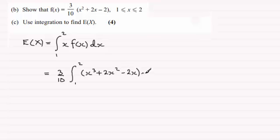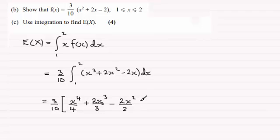We're going to get three tenths, and setting up a square bracket here, integrating x cubed, we just add 1 to the power, that's x to the power 4 and divide by the new power. For 2x squared, it's going to be plus 2x cubed, add 1 to the power and divide by the new power. And for minus 2x, that would be minus 2x squared divided by 2, and we close that bracket with limits between 1 and 2.